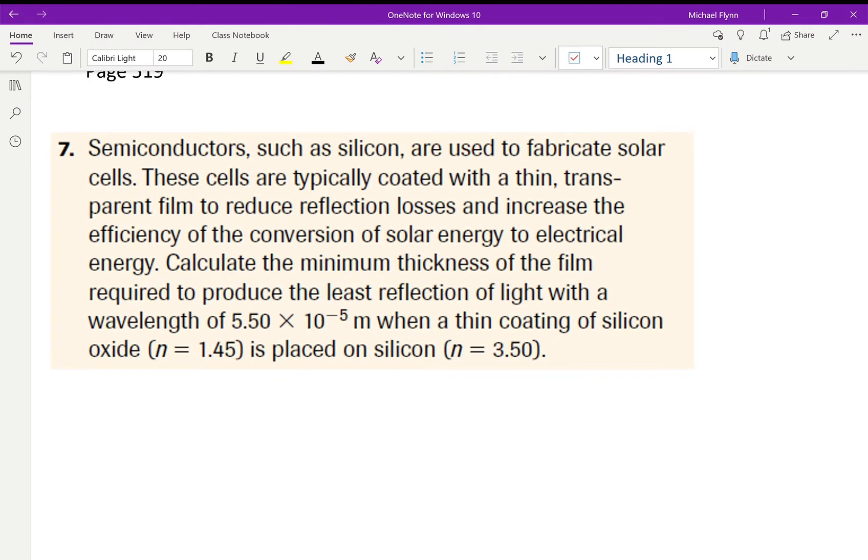All right, so semiconductors such as silicon are used to fabricate solar cells. Solar cells, like on my roof. These cells are typically coated with a thin transparent film to reduce reflection, so it's an anti-reflective coating, and increase the efficiency of the conversion of solar energy to electrical energy.